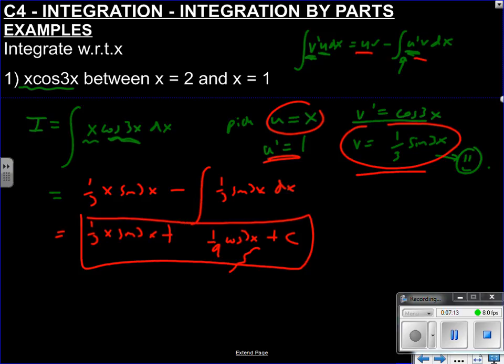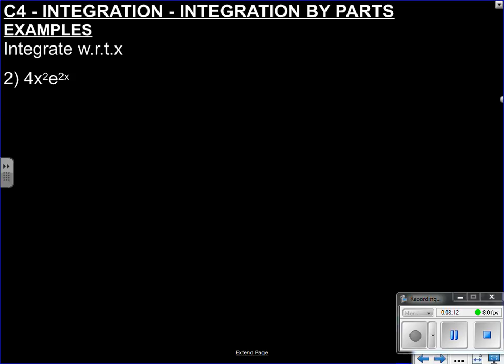So note what would have happened if we picked u as cos 3x and v dash as x. It's completely inappropriate because u dash is going to give me minus 3 sin 3x, that hasn't broken anything down, and if I integrate x I get half x squared. It hasn't helped me whatsoever. Some of you may be thinking, why don't I put a plus c here? Well we don't need to because the actual integration constant is already accounted for right at the end with the plus c. So hopefully you can see what u needs to be.